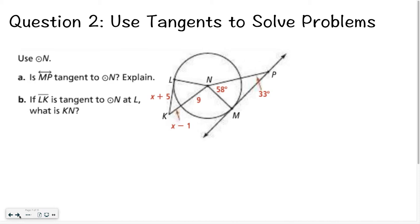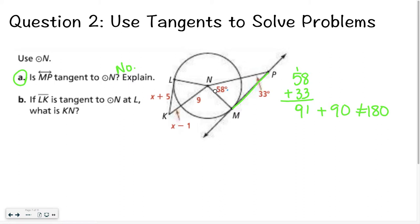Now it's your turn — determine if line MP is tangent to circle N. Hopefully you got no. You could do 180 minus 58 minus 33, and you'd see that last angle is only 89 degrees instead of 90. Or you could add the two angles together and find they equal 91 — and 91 plus 90 is not 180 degrees. The reason we look for 180 is because it forms a triangle, and if you have 91 plus 90, that's more than 180 — so it wouldn't be a triangle, and therefore it's not tangent.